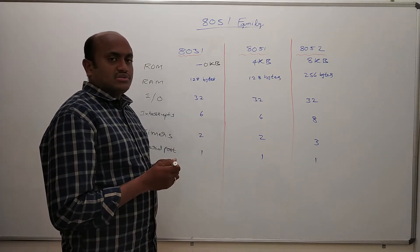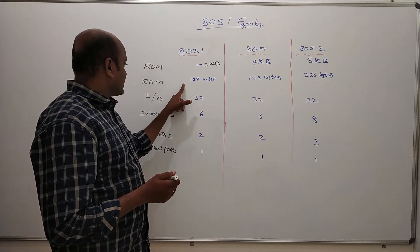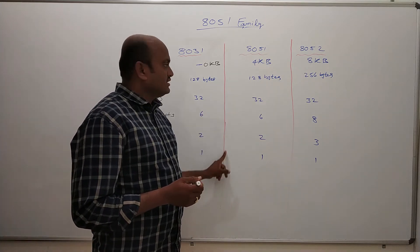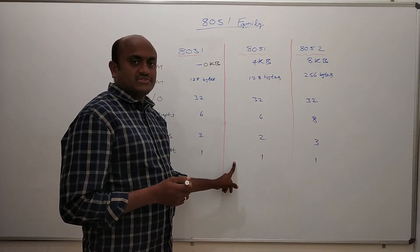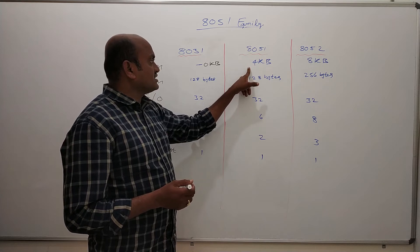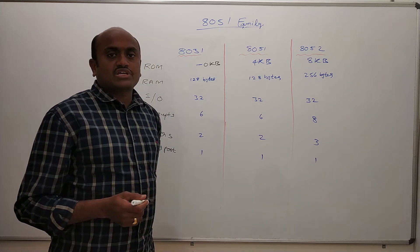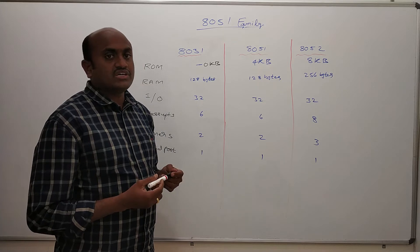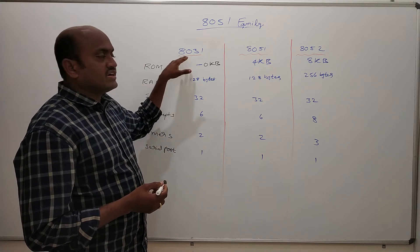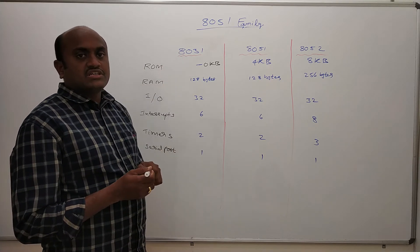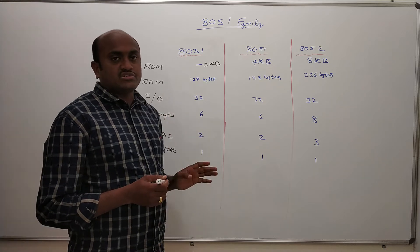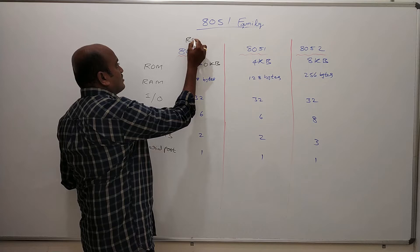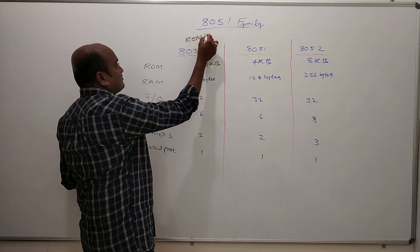If you look at the 8051, all the parameters — RAM, IO, interrupts, timers, and serial port — are the same as the 8031. The only difference is that 8051 has 4 kilobytes of ROM memory. So we can say that the 8031 is a ROM-less 8051, which is why 8031 is also called a ROM-less 8051.